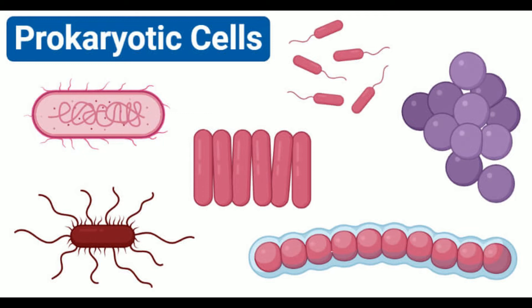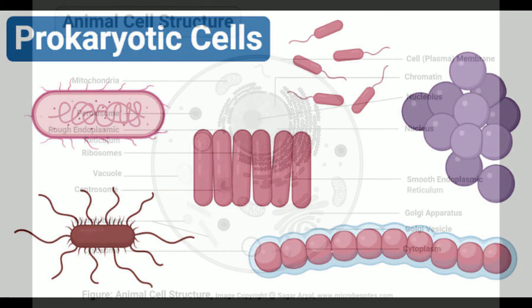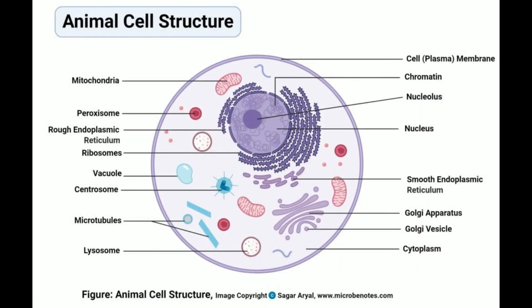Cytoplasm: The cytoplasm is the entire space inside the cell membrane. It contains a gel-like cytosol and a water-based solution containing minerals and other ions essential for the cell. The cytoplasm also contains other cellular structures like chromosomes and ribosomes. All prokaryotic cells have 70S ribosomes, made up of two subunits: 30S and 50S.